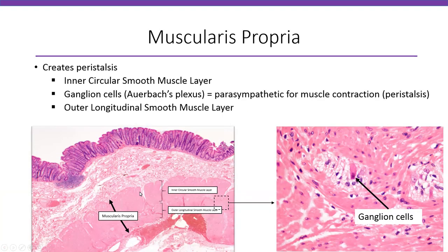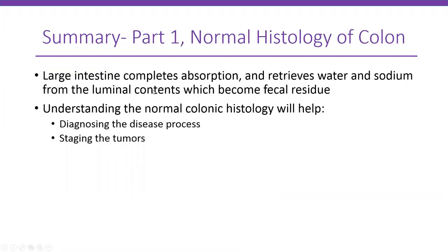The muscularis propria creates peristalsis. It has an inner circular smooth muscle layer and an outer longitudinal smooth muscle layer. In between these layers you have ganglion cells and nerve bundles — the Auerbach's plexus — which is the parasympathetic nerve responsible for muscle contraction and peristalsis.